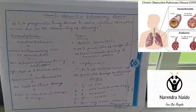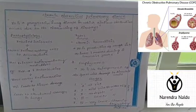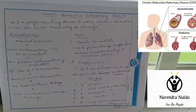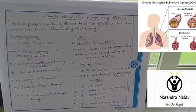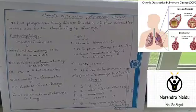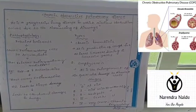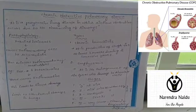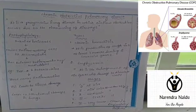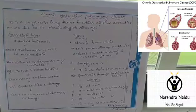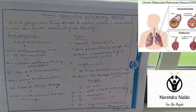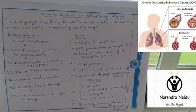The pathophysiology of COPD involves the inhalation of irritants. These irritants cause inflammatory cells to accumulate, which then release inflammatory mediators such as TNF-alpha and interleukins. These mediators cause inflammation at the site, leading to tissue damage and structural changes in the lungs.